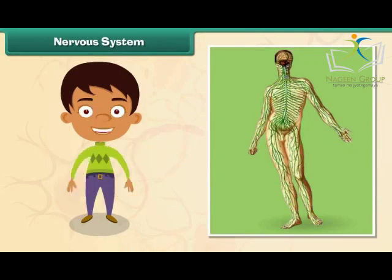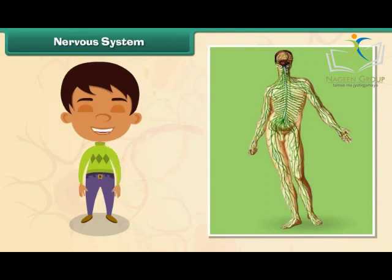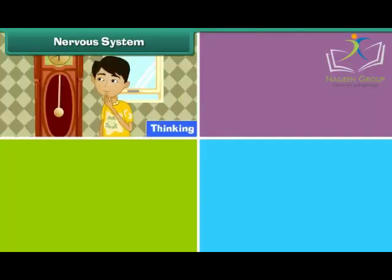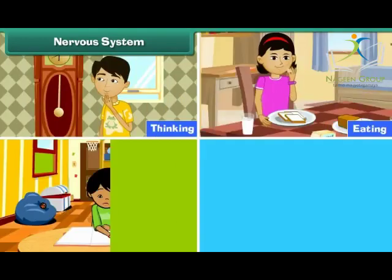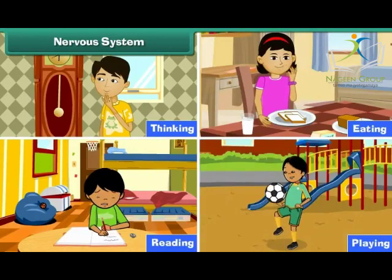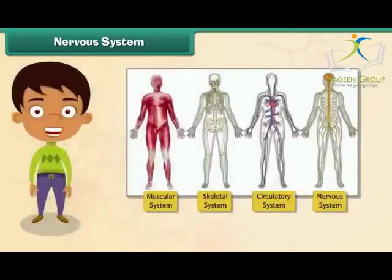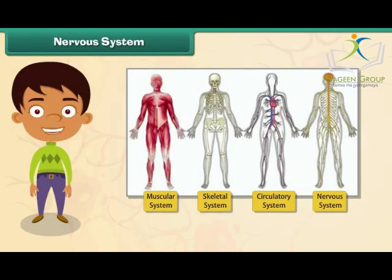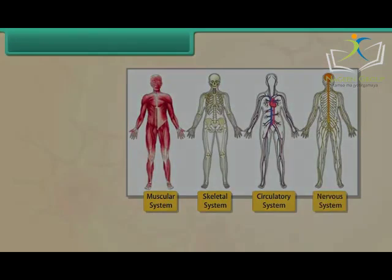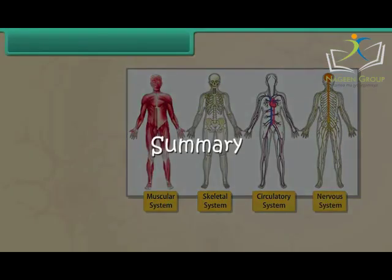The human nervous system consists of the brain and nerves. It controls all physical and mental human activities such as thinking, eating, reading, and playing. All other organ systems and their functions are controlled by the nervous system.